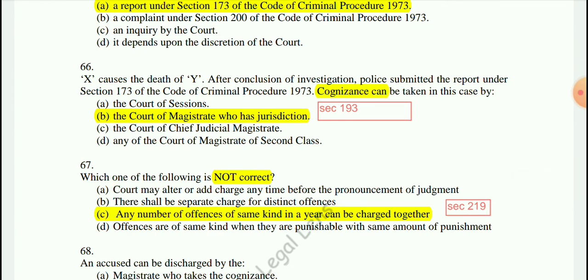Question 67: Which one of the following is not correct? The wrong statement is: any number of offenses of the same kind in a year can be charged together. Options A, B, and D are correct.